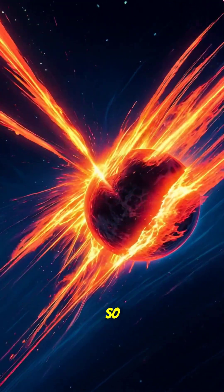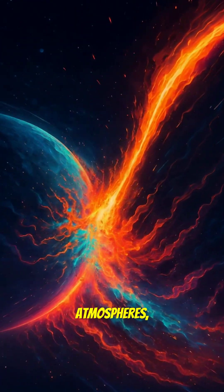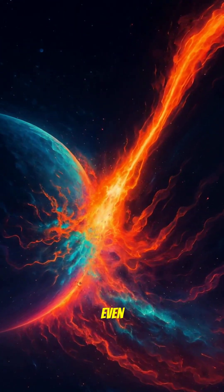Because these planets orbit so close, they get blasted by stellar flares. These flares can strip away atmospheres, making the oxygen buildup even more confusing.